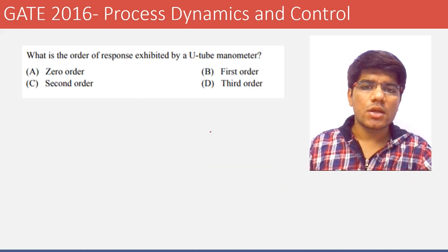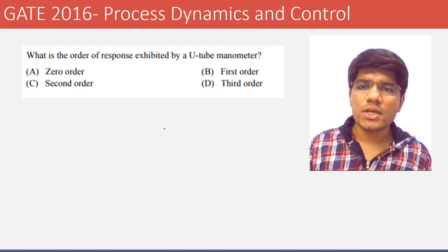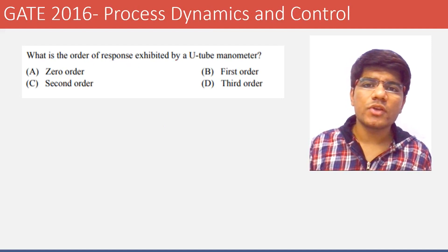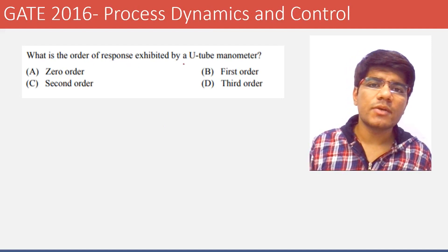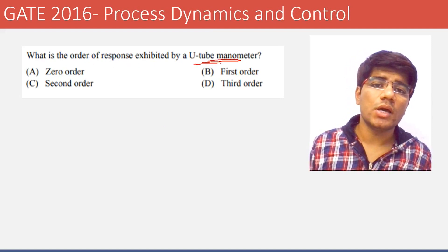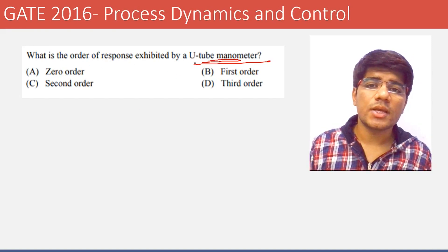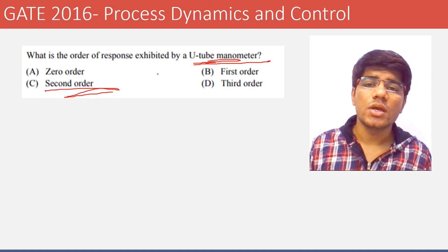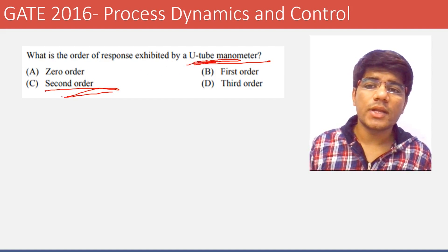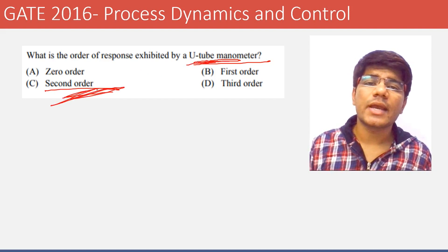The next question is: what is the order of response exhibited by a U-tube manometer? You should know that the U-tube manometer gives a second order response function.